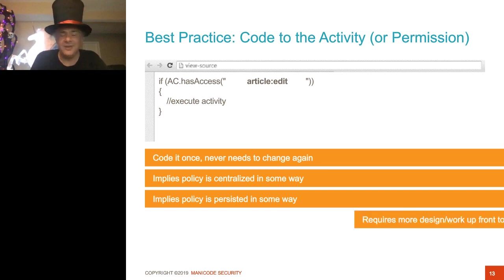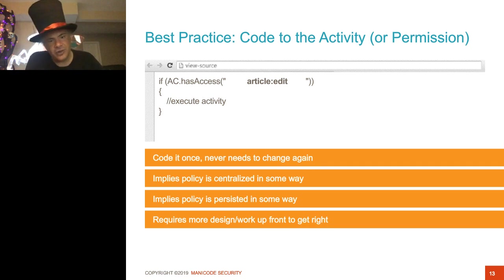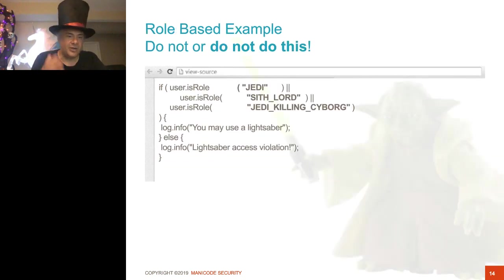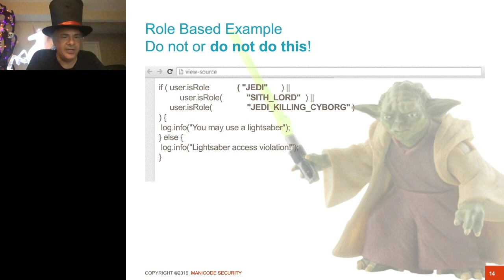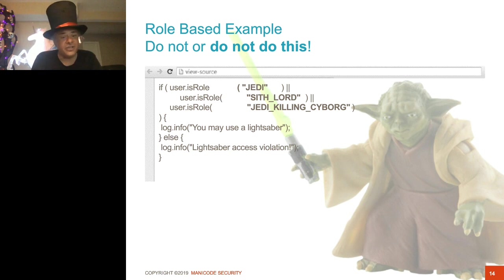Let's see what we can do with this — it gets really powerful fast, but it does take design work up front. That's why a lot of us as developers just start hard-coding roles — they work right away. To do activity, permission, or capabilities-based access control, we have to really design a database up front. I'm trying to avoid this: here's a Star Wars example — if the user is a Jedi, if the user is a Sith Lord, if the user is a Jedi-killing cyborg, then let them wield the lightsaber. Every time I add a new character type, I have to change the code.